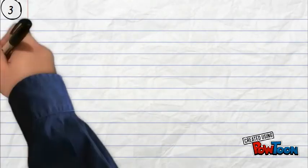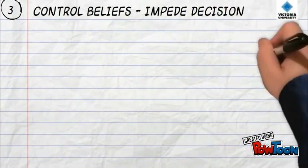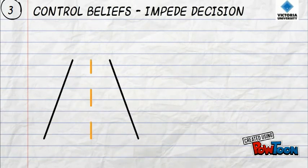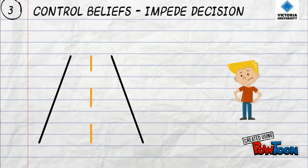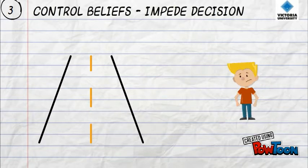Finally we will look at control beliefs. This is where it could either make or break a final decision. Travel distance, too far to travel to university, or the other major concern is the financial aspect. These are just some examples of factors that may impede performance of behaviours for individuals.